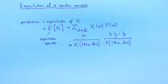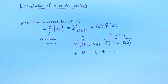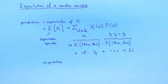We also have to consider the sample Ben-Carl. x1 evaluated on Ben-Carl is 18, since Ben is 18 years old, and again the probability is 1 over 9. We continue in the same way for all other possible samples. For this example, you can verify that the expectation is 21. As you can see, the expectation gives us a probability-weighted average of all possible values of x1. An expectation will always be a single number.